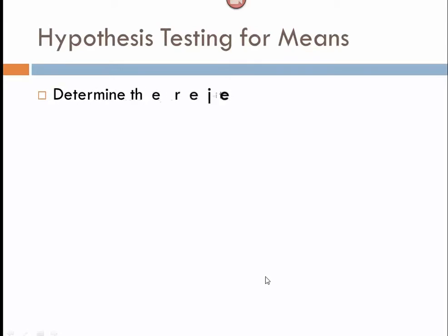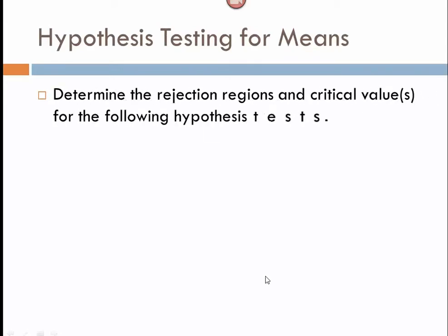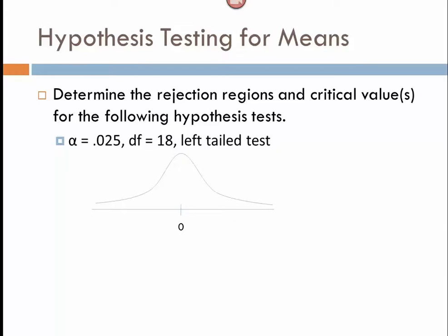So, just a quick sample. Determine the rejection region and the critical values for the following hypothesis tests. We're going to start with this one. We're going to assume our alpha is 0.05, so that's our significance level. Our degrees of freedom are 18, and it's a left-tailed test. The question is, what is the critical value that separates my rejection region from the failing to reject region? Keeping in mind that the area of the rejection region is always equal to your alpha, your significance level. And in this case, it's at 0.025. See if you can determine the T value for this.